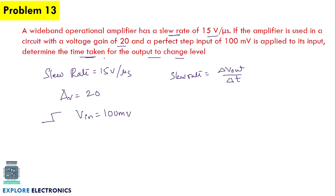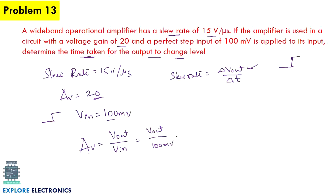Using the slew rate expression delta Vout / delta T, we first need to calculate Vout. Since slew rate formula requires Vout but it's not directly given, we use the voltage gain: Av = Vout/Vin. Rearranging, Vout equals Av times Vin equals 20 times 100 millivolts equals 2000 millivolts, which rounds to 2 volts.